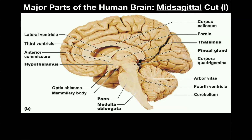Now we're going to switch gears and move toward the brain stem. The brain stem is composed of three general structures: first, we have the midbrain, which is in this area directly underneath the thalamus; then inferior to the midbrain, we have the pons, which is this bulge right here; and inferior to that, we have the medulla oblongata, which as we go inferior becomes continuous with the spinal cord.